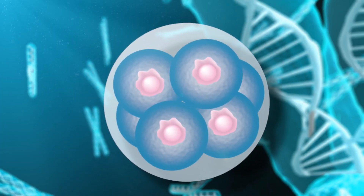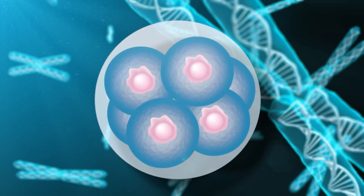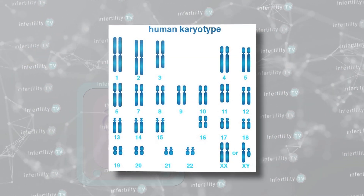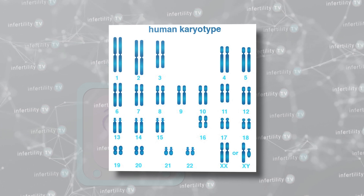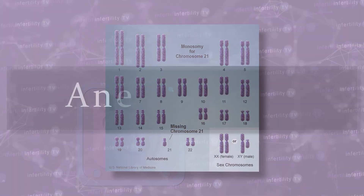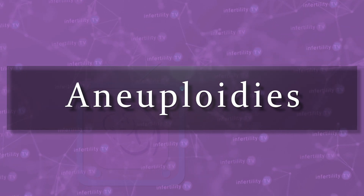Because miscarriages are so common, doctors will usually not recommend any special testing unless a couple has had two or more miscarriages. Most miscarriages are due to abnormalities from the embryo. A normal healthy embryo should have 46 chromosomes — 23 from each parent. In the majority of miscarriages, 60 to 70 percent, the fetus has too many or too few chromosomes. These are called aneuploidies.